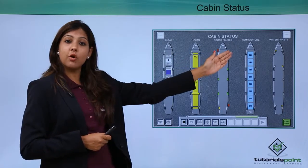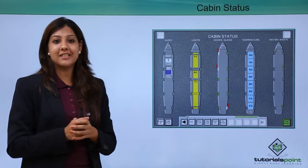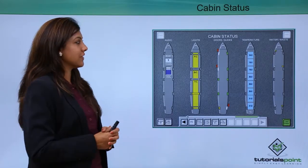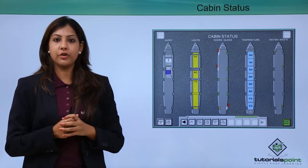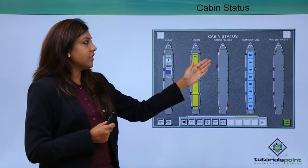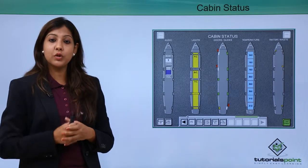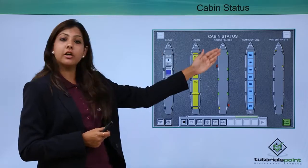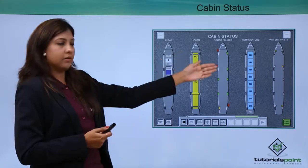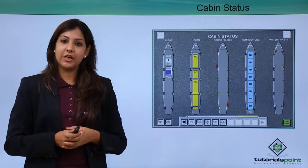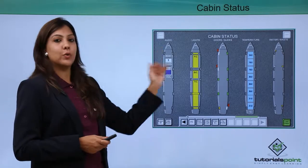The flight attendant can also control the temperature of the aircraft — if it gets very cold inside the cabin, she can increase or decrease the temperature depending on the needs of the passengers. She also has the water and waste status on this panel, and can check whether waste and water material is adequate. Before landing at a destination, she can inform the ground engineer that waste needs to be removed and that water levels in the cabin, galley, or lavatory need to be replenished. This is a page the flight attendant must know how to access.